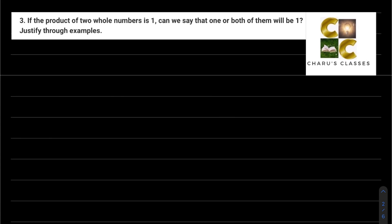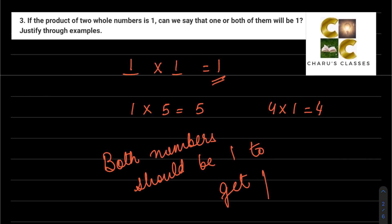Question number 3: If the product of two whole numbers is 1, can we say that one or both of them will be 1? Two numbers multiplied to give us one, will one or both be 1? As you know, 1 multiplied by any number gives that same number as answer. So if we want the answer to be 1, that is only possible if we multiply 1 by 1. So here both numbers should be 1 to get product 1. If any other number comes, our answer will not be 1.